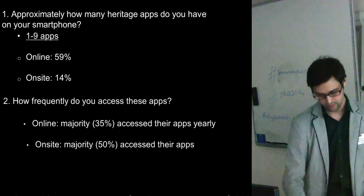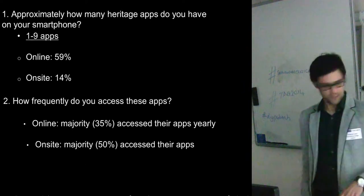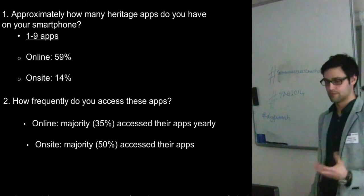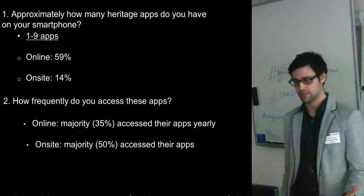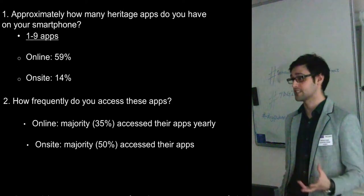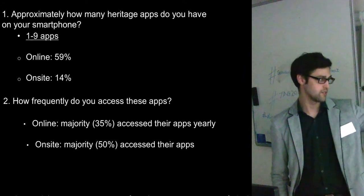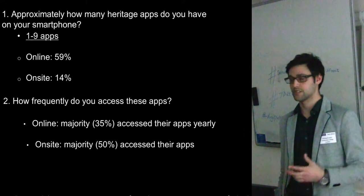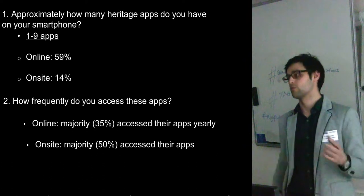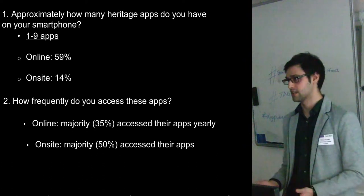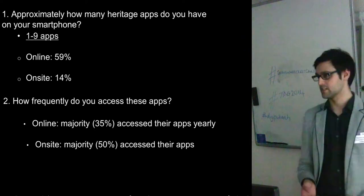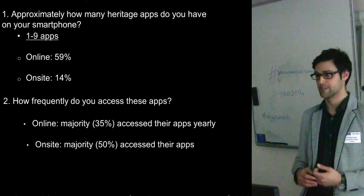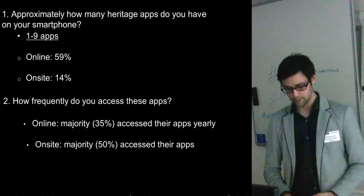Looking at how frequently apps are being used, 50% of people on site use their heritage apps monthly, whereas the majority of online people — around 35% — only use them yearly. This shows people are going to a site once a year and using the app just that once. Meanwhile, on-site visitors are using apps like the English Heritage Days Out app or the National Trust app, which provide information about opening times, prices, and events — giving them a lot more utility.